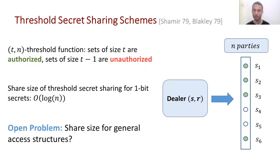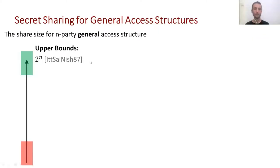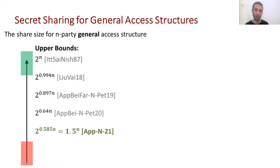It is a big open problem — and this is the problem we're trying to solve here — to know what is the worst-case share size for any access structure. This problem was first considered by Ito et al. in 1987, where they showed how to build a secret sharing scheme for every access structure with share size of 2 to the n. It took over 30 years to improve this result. It was only broken by Liu and Vaikuntanathan three years ago, where they showed how to reduce this exponent by just a little bit. This inspired the following line of work by Applebaum, Baymel, Faras, myself, and Peter, where we reduced the exponent down to 0.585.